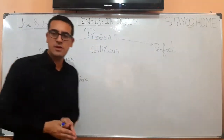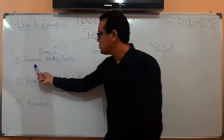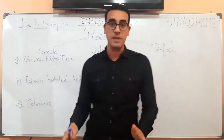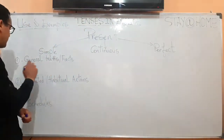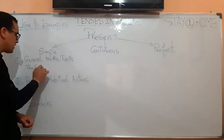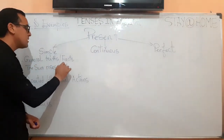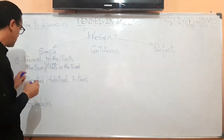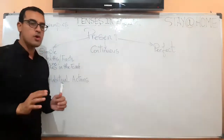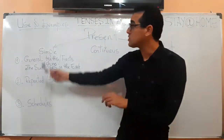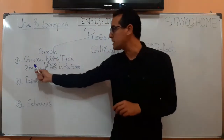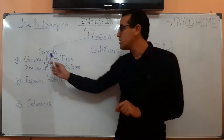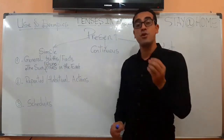Let's start with the present simple. Use number one: general truths and facts. A fact is something that cannot be changed. For example, the sun rises in the east — meaning it shines from the east. This is a general truth or fact that nobody can change. So use number one of the present simple is for general truths or facts: the sun shines in the east, the sun sets in the west, and so on.